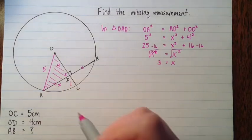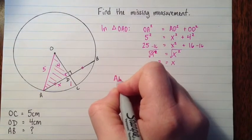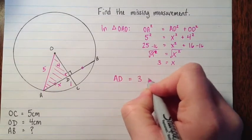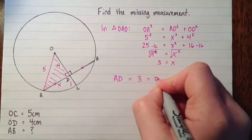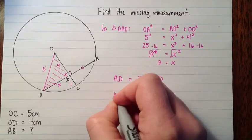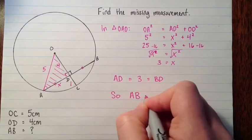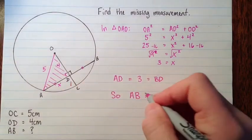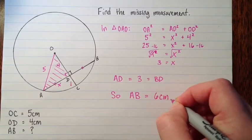So from A to D is 3 centimeters. We know that AD is 3, and we also know that BD is also 3. So AB equals, so it's 3 plus 3, 6 centimeters. And there we go. That's it.